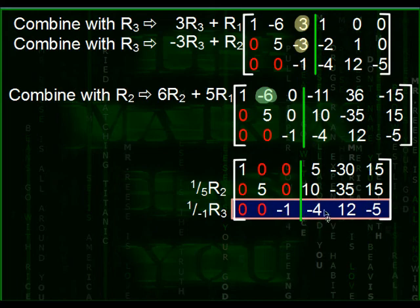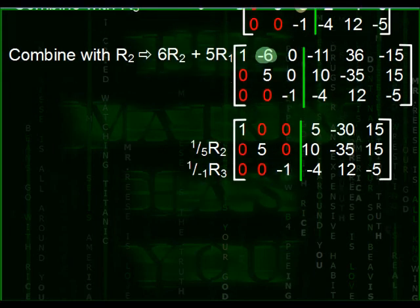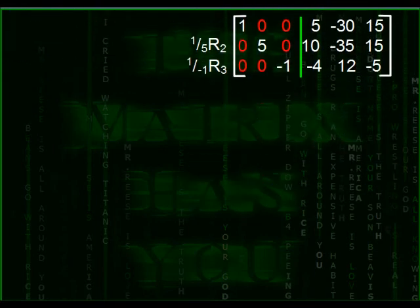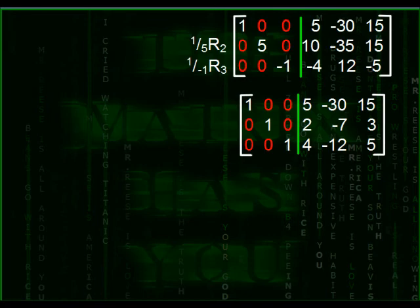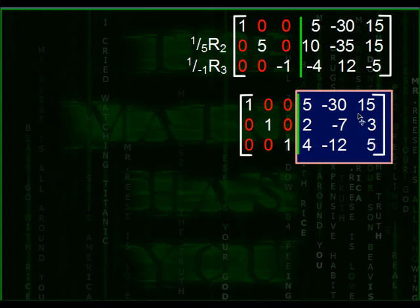So once you've done that, then what you get is this. And that essentially finishes it off. Now that we have the identity on the left-hand side, these values that you have on the right, that's your inverse. Therefore, there's your answer.